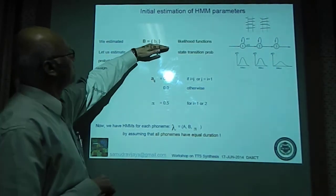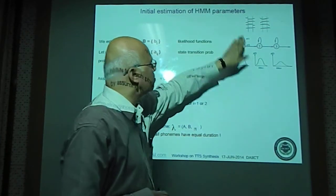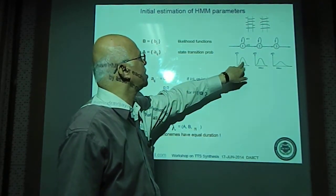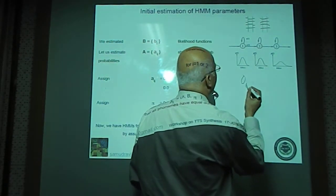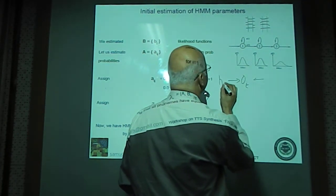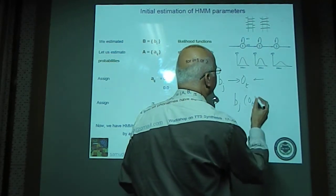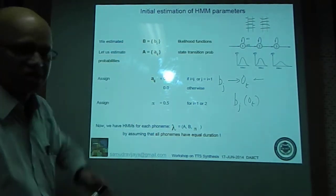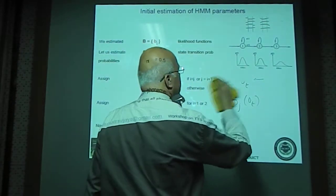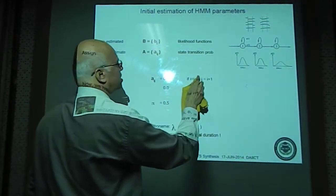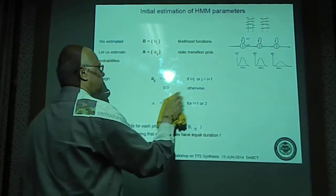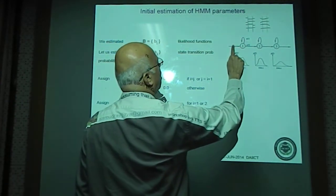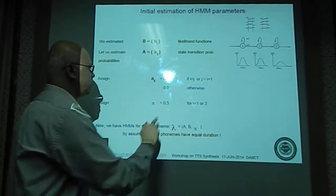We have estimated the likelihood functions — the conditional probability that a given observation Ot is emitted by the j-th state, denoted by b_j(Ot). For the transition probability matrix, we can assume a transition probability of 0.5 for self-transition or transition to the next state, and zero otherwise. Similarly for the initial probability pi, we can assume the system transitions to state 1 or skips to state 2 with probability 0.5.